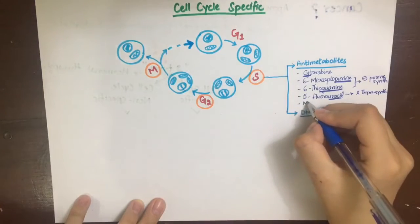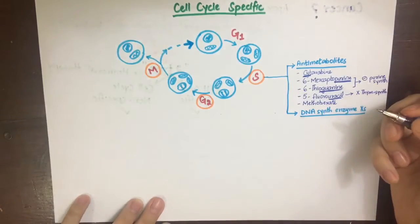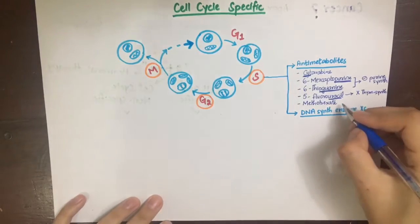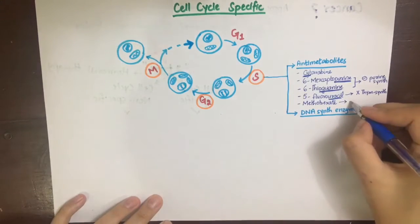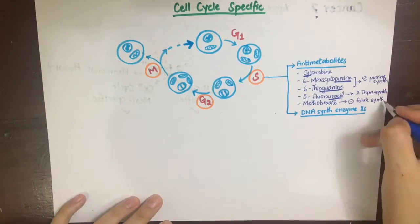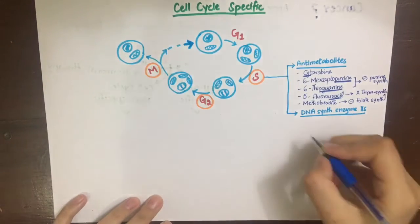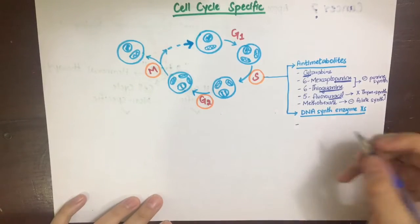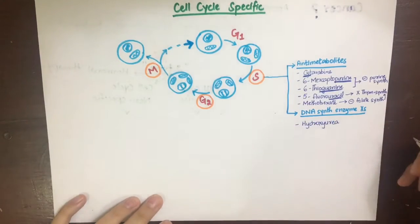Methotrexate is a folic acid analog that inhibits the enzyme dihydrofolate reductase. By doing so, it prevents the formation of tetrahydrofolate. Folic acid is essential for the synthesis of purines and thymidylate and thus DNA and RNA synthesis.